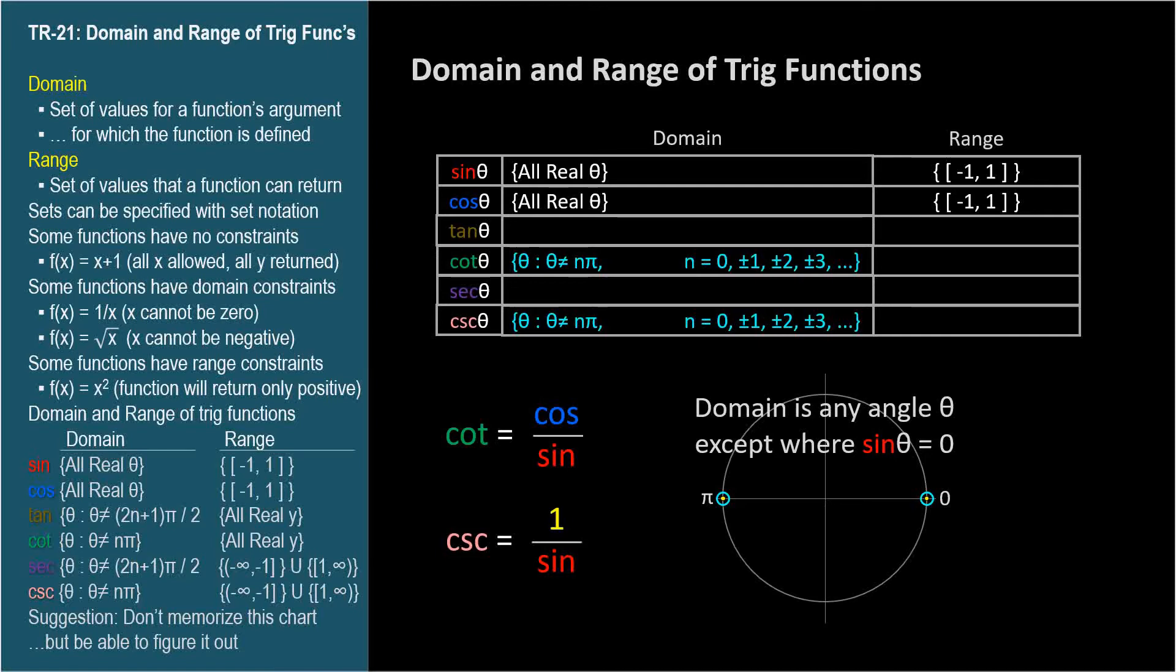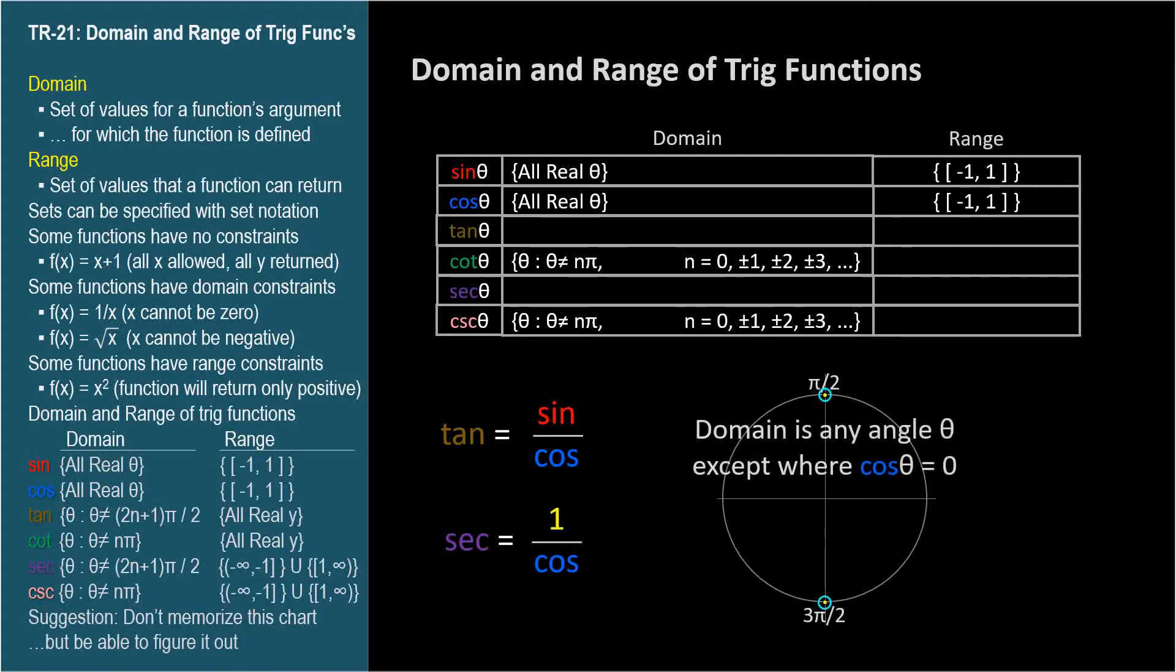Now let's consider the domain of tangent and secant. Tangent is sine over cosine, and secant is 1 over cosine. So these functions are both undefined, that is, they have asymptotes, at angles where the cosine is zero. This is at the top and bottom of the circle, at π/2 and 3π/2 radians, and at all angles coterminal with these.